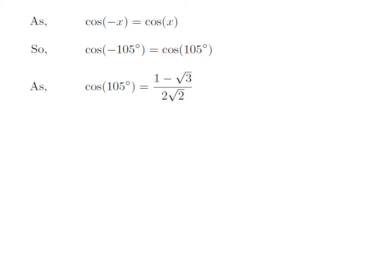The value of cosine of 105 degrees is equal to 1 minus square root of 3 upon 2 into square root of 2. The video explaining how to find the value of cosine of 105 degrees is appearing in the upper right corner. Please check the video and follow the steps to find the value of cosine of 105 degrees. Also, the URL address of the video has been mentioned in the description section.